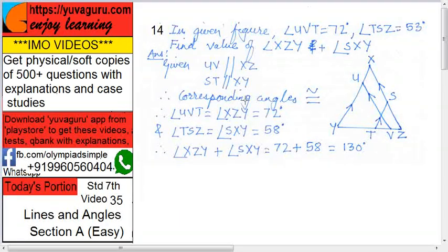See this, UV parallel to XZ, it's given UV parallel to XZ. Nothing is mentioned in the figure, in the problem, but always remember this figure. When the two arrows are shown in the same direction, it means that these lines are parallel. It may not be stated in the problem.